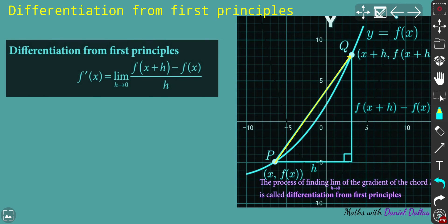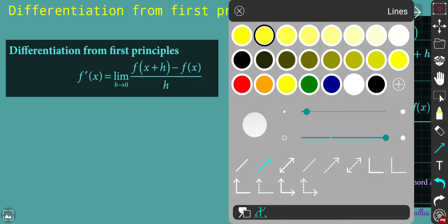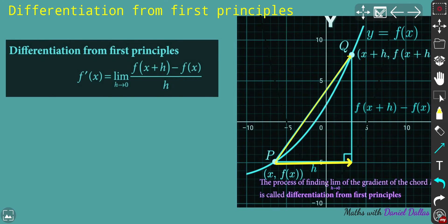We got the gradient of PQ defined only by the constant h, which represents the step. Going back to the graph, h is exactly the change in x-coordinates between points P and Q. That's why the expression is completely depending on h, because the function is also dependent on h.